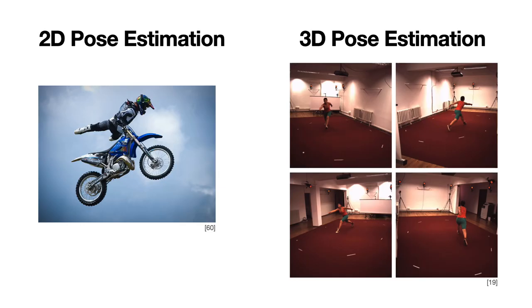In general, we differentiate between 2D and 3D human pose estimation. In 2D pose estimation, we want to know for each key point of the body the pixel location, whereas in 3D human pose estimation, we want to get 3D coordinates in space for each key point. Acquiring 2D pose training data is the easier task, because it can just be clicked by hand. 3D pose data, in contrast, requires usually a complex setup, like a motion capture studio and multiple cameras.